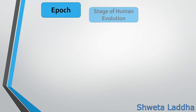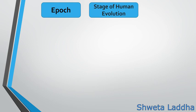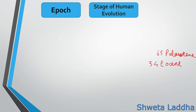Let us see the different epochs and stages of human evolution. 65 million years ago was the Paleocene epoch, during which the first primates diversified. 54 million years ago was the Eocene epoch, during which placental mammals first developed. Then came the Oligocene epoch, 38 million years ago, during which the first monkeys and apes developed.